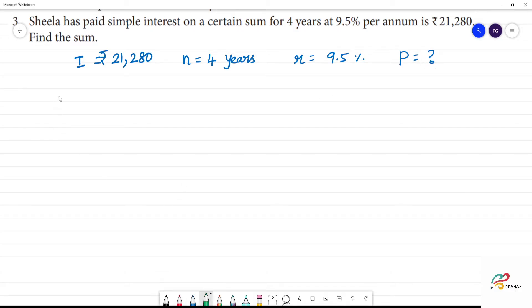We know the formula is I equals PNR by 100. Now we need to get P. So P is here.